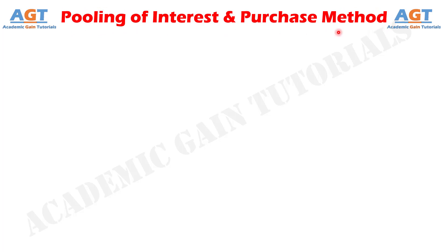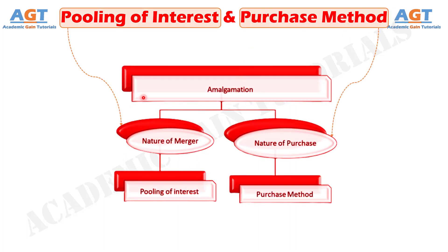Amalgamation implies a process of unification of two or more companies which are involved in similar business to form a new company. As per Accounting Standard 14, amalgamation can take place in two ways: in the nature of merger and in the nature of purchase. When amalgamation is in the nature of merger, the method of accounting used is the pooling of interest method, whereas when the amalgamation is in the nature of purchase, purchase method of accounting is used.